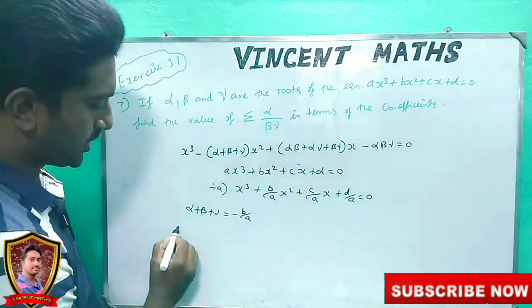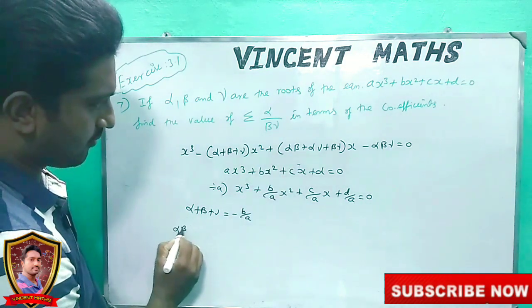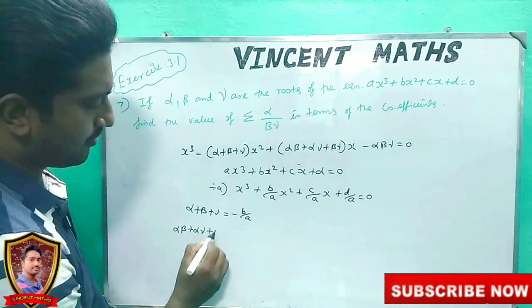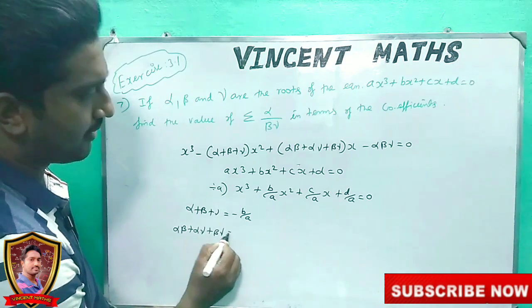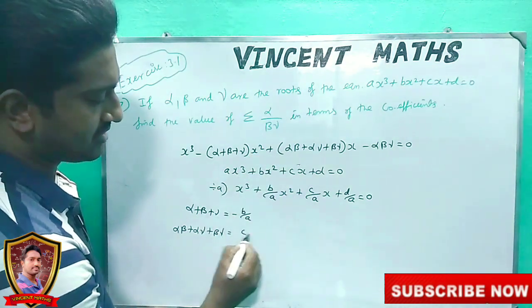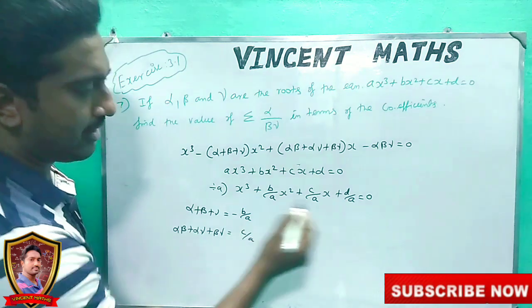If you compare this two at a time: alpha·beta, alpha·gamma, beta·gamma — plus, plus, plus — equals c by a.